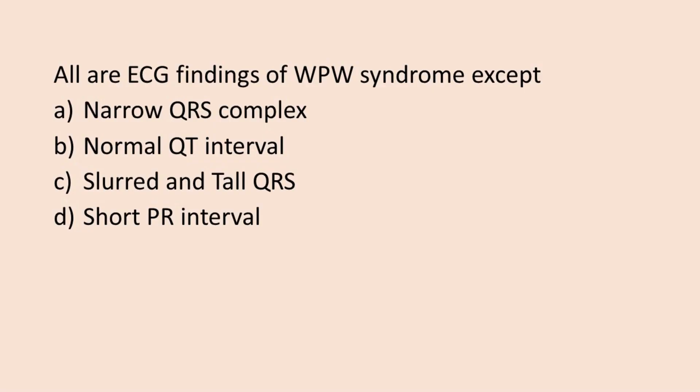Let's solve this MCQ. All are ECG findings of Wolff-Parkinson-White syndrome except: Option A, Narrow QRS complex. Option B, Normal QT interval. Option C, Slurred and tall QRS. Option D, Short PR interval.